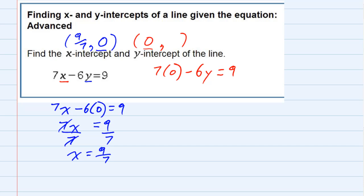And then solving here for y, 7 times 0 is 0, so that's minus 6y equals 9. Dividing both sides by negative 6 gives me y equals... I can simplify that fraction to negative 3 halves.